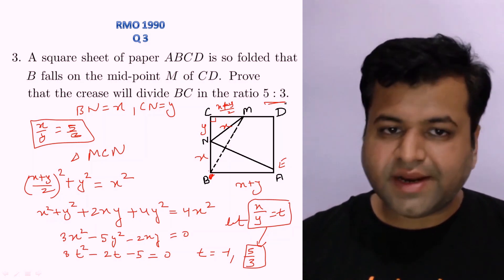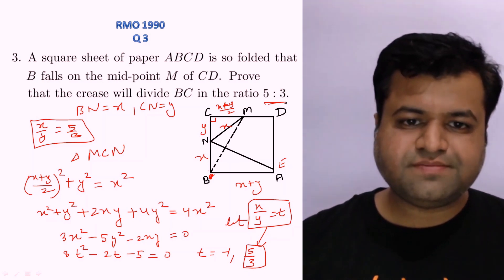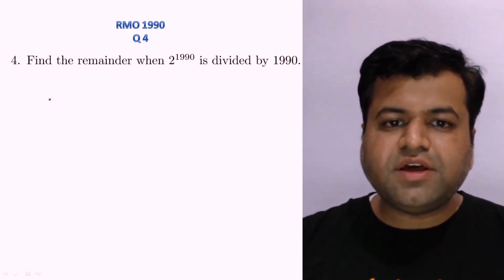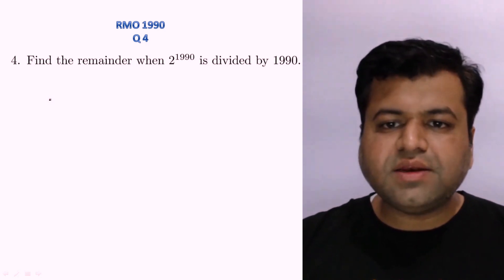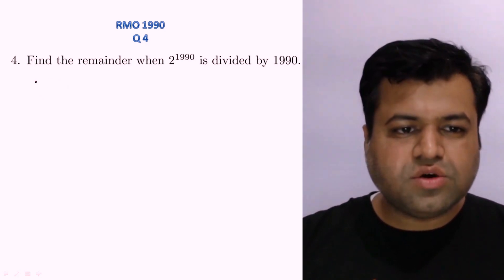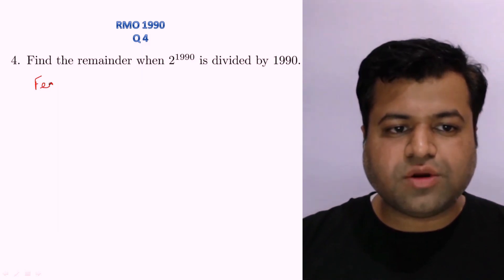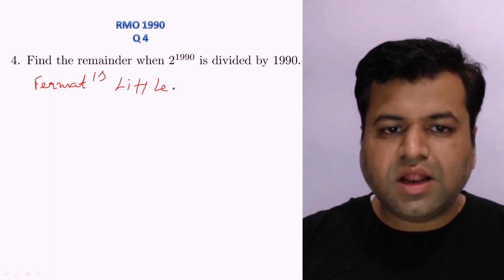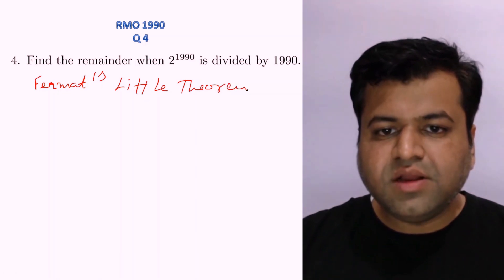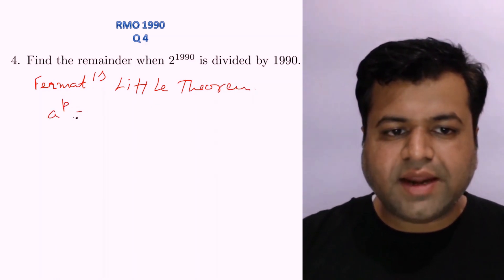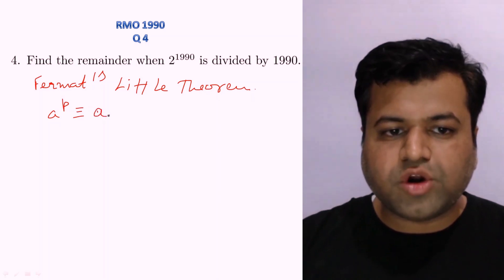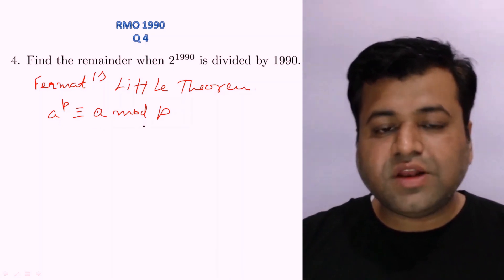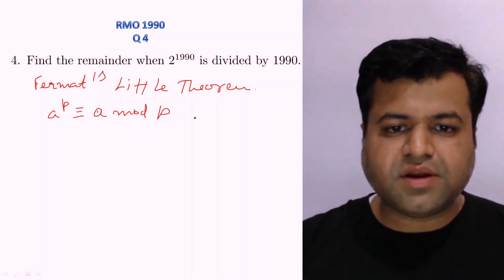Let's move to question number 4 of RMO 1990. The question says: find the remainder when 2^1990 is divided by 1990. This is a simple application of Fermat's Little Theorem. The theorem states that a^p and a leave the same remainder when divided by p, where p must be a prime number.